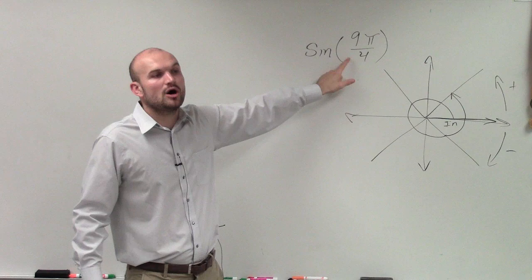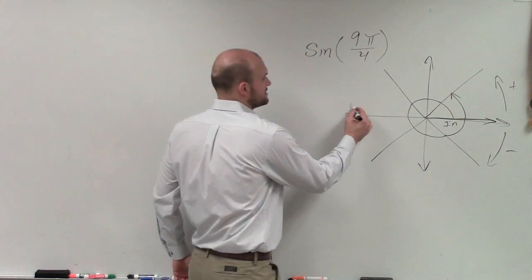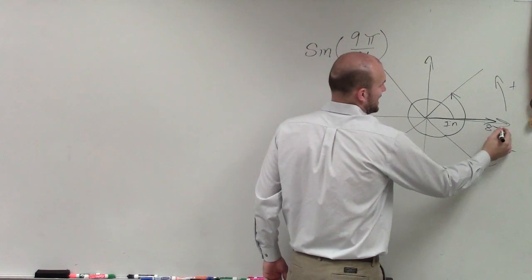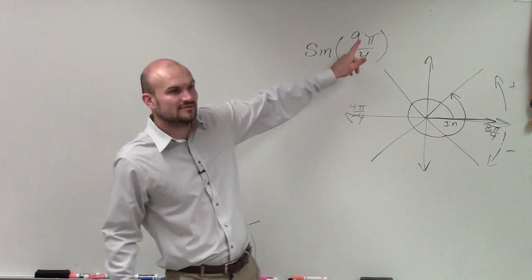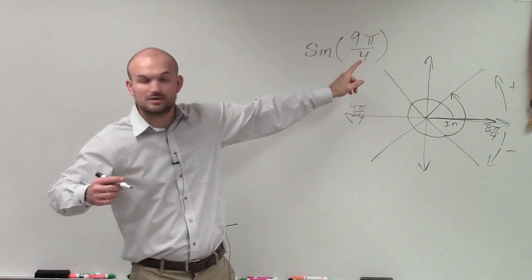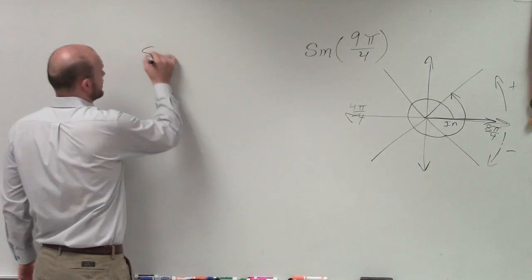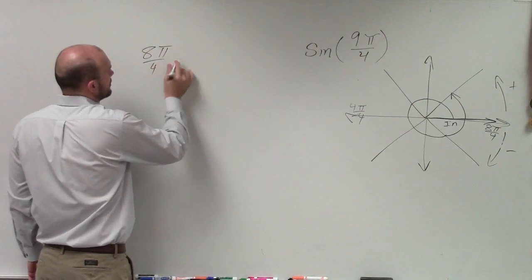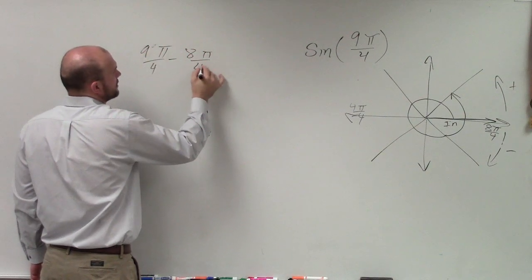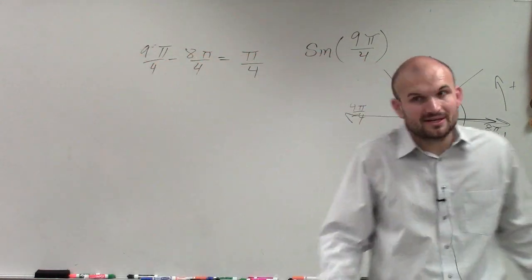Let's take 9π over 4 and find the smallest angle. If this is 4π over 4, then all the way around the circle would be 8π over 4. Can I subtract 8π over 4, which is one revolution, and still have a positive angle? Yes. So 9π over 4 minus 8π over 4 leaves me with π over 4.